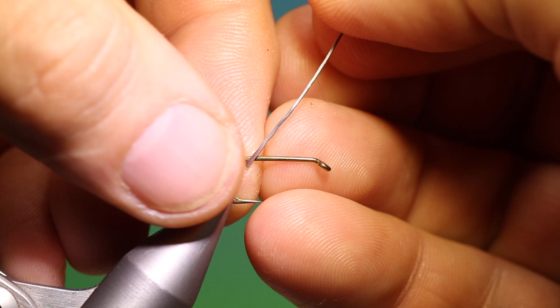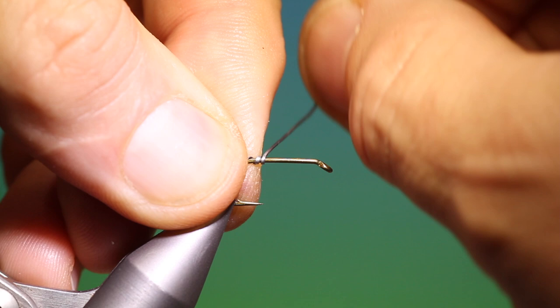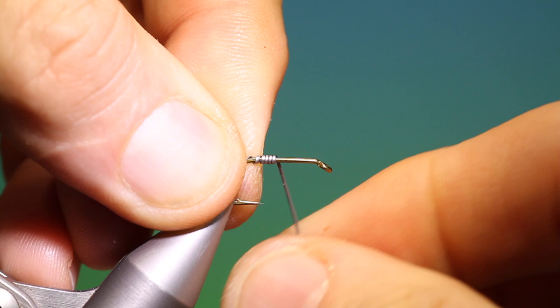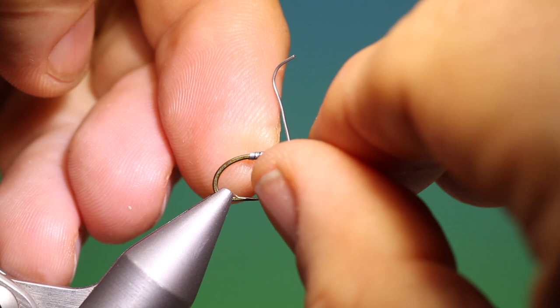We take the lead wire by the flattened end and hold that at the rear of the hook, just like so. Now we can start to wind this forward. As you go forward you will see that it increases in size and gives you a nice taper on the underbody.